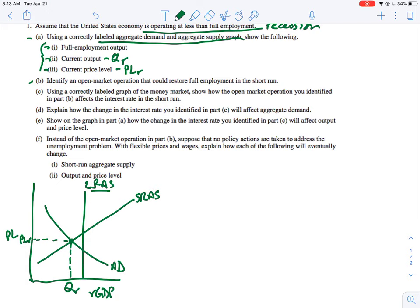All right, so that is all we need for A. Now identify an open market operation that could restore full employment in the short run. So open market operations, we know this is monetary policy. Open market operations only has one option: you can either buy bonds or sell bonds. So for part B, we can either buy or sell. Which one is going to put cash in? So we want the cash to go up in the economy, and the Fed does that by buying bonds. So the Fed will buy bonds, and that will help restore full employment.